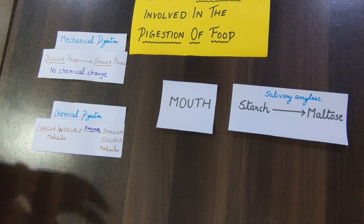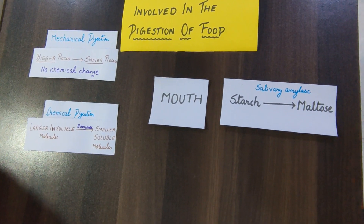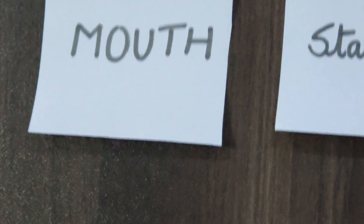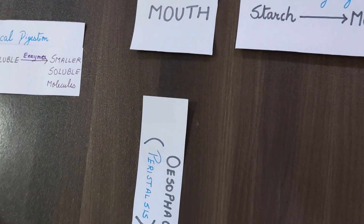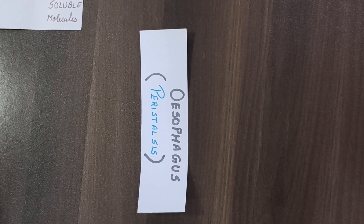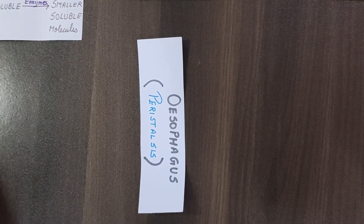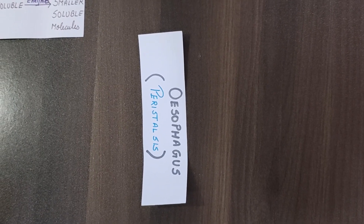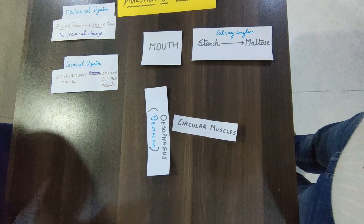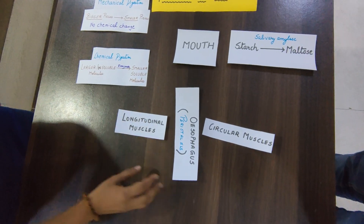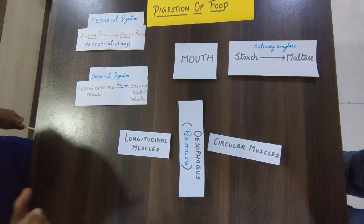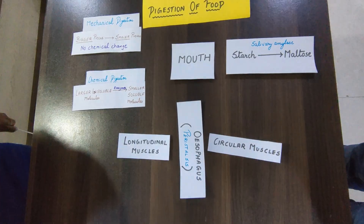After partial digestion of food in the mouth, the food goes through the esophagus by the process called peristalsis. Here, keep in mind there are no enzymes involved, but there are circular muscles and longitudinal muscles which help push the food from the mouth into the stomach.